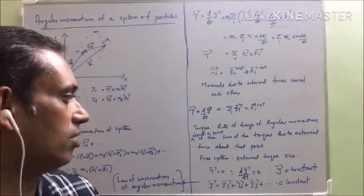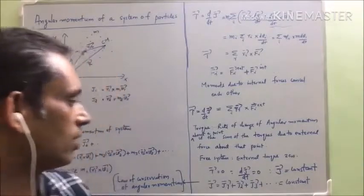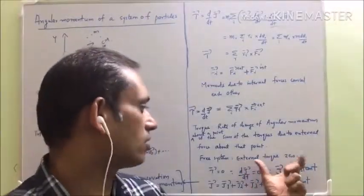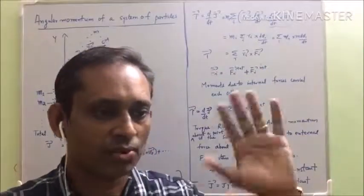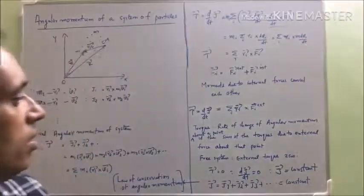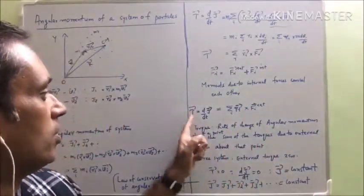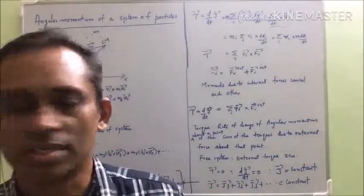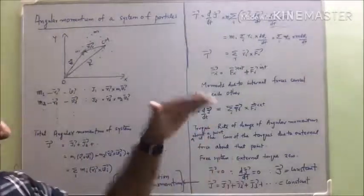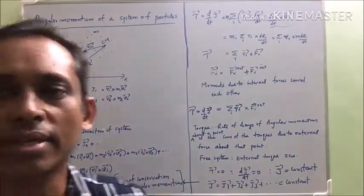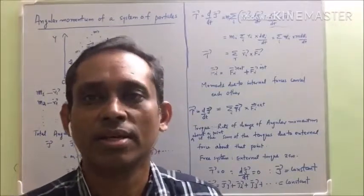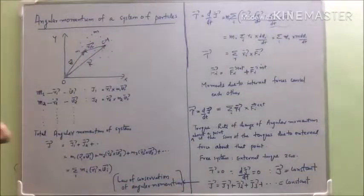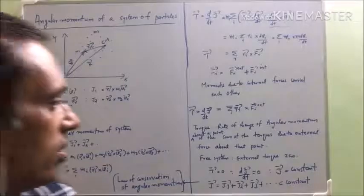The total torque acting on the system — the rate of change of angular momentum about a point — equals the sum of torques due to external forces about that point. In the case of a free system, external forces are zero, so external torque is zero. Therefore the rate of change of angular momentum equals zero, meaning angular momentum is constant. So the total angular momentum J equals J1 plus J2 plus J3, which is a constant when no external torque acts on the system. This is the law of conservation of angular momentum.